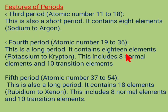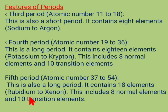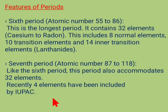The fourth period contains 18 elements, including 8 normal elements and 10 transition elements, from potassium to krypton. The fifth period is the long period, containing 18 elements, including 8 normal elements and 10 transition elements, from rubidium to xenon. The sixth period is the longest period, containing 32 elements: 8 normal elements, 10 transition elements, and 14 inner transition elements. The 14 inner transition elements are called lanthanides, from cesium to radon.